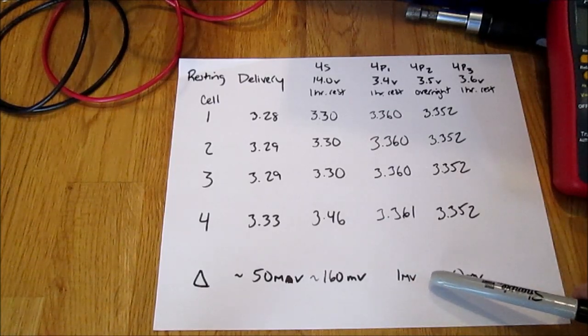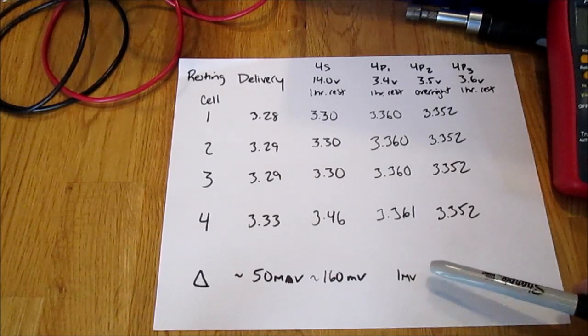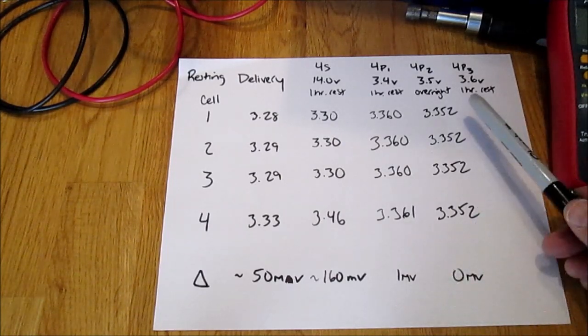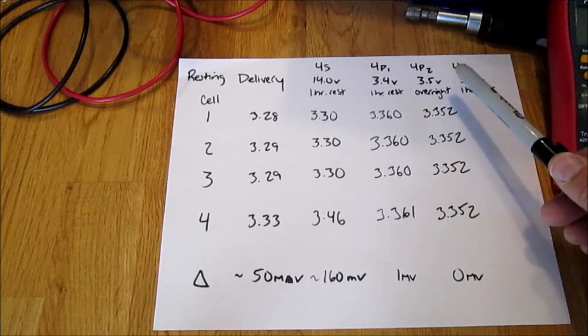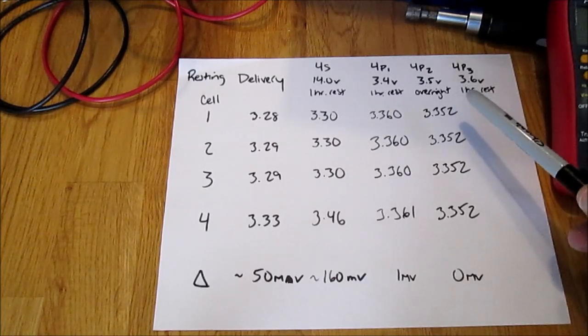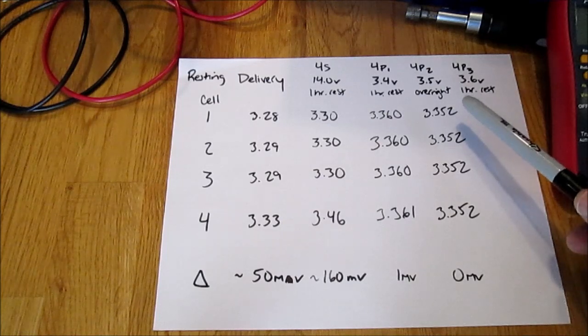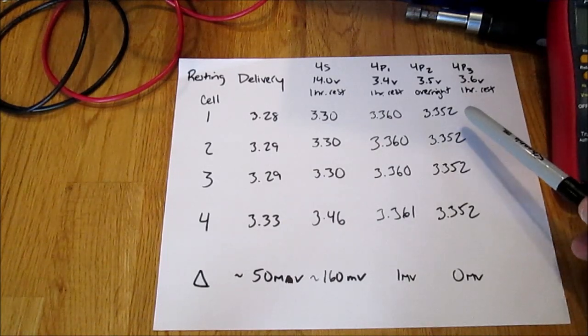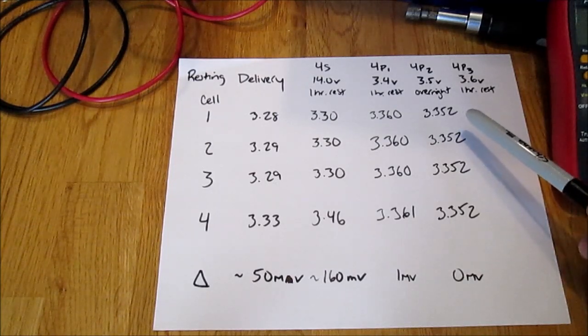At this point we moved from a 50 millivolt difference upon delivery. When we connected them in series and charged them at 14 volts, the difference between the four cells grew to 160 millivolts.